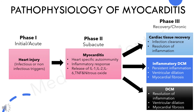Now let's get into the details of the pathophysiological changes in myocarditis. Phase 1 is characterized by active viral infection and replication, and can be triggered by either infectious or non-infectious causes. During this phase, initial myocyte injury takes place, causing release of antigenic intracellular components such as myosin into the bloodstream.